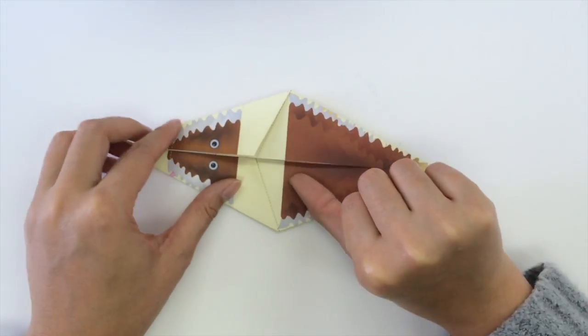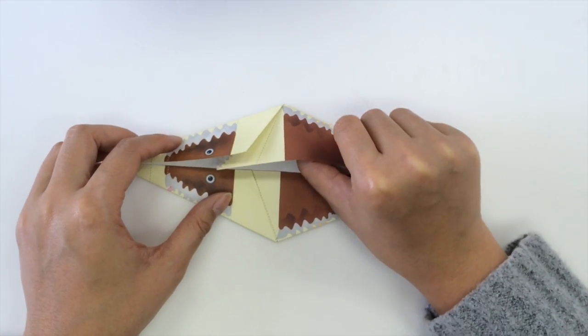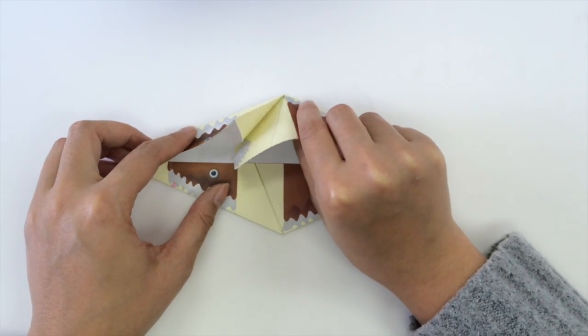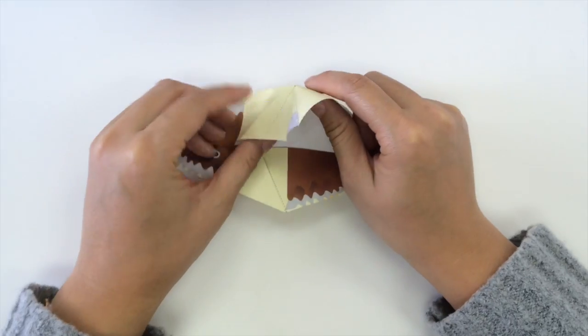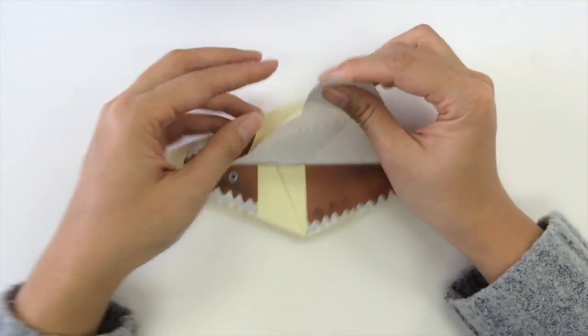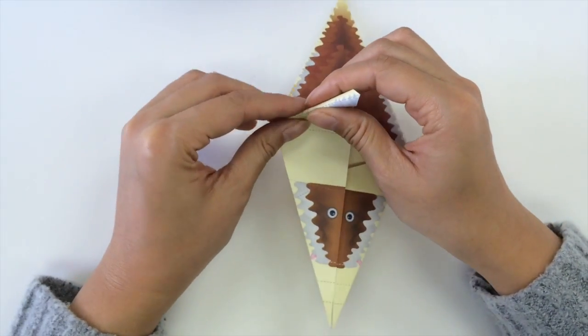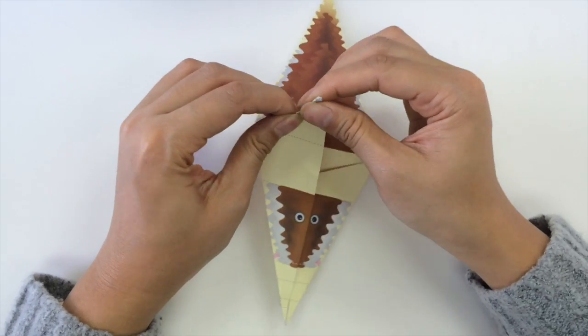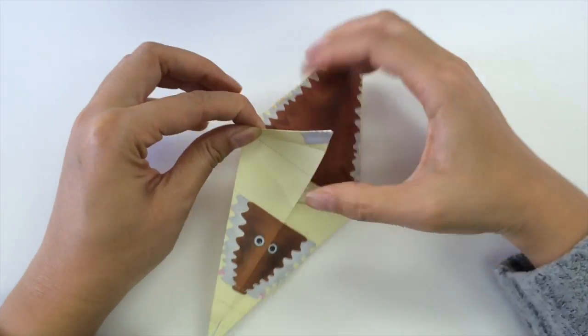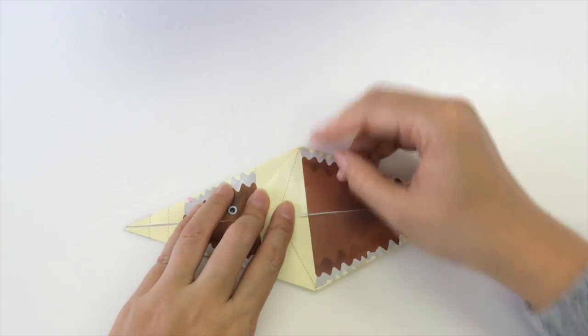Next, we're going to insert our thumb underneath the flap and then we're going to pull it out. As we pull it out, this piece will come out and we need to press it so that we get a tip. And then we will fold it back to the left.